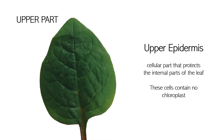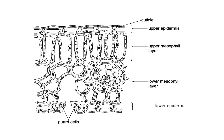Below the cuticle are the upper epidermal cells. This is a layer of cells that contains no chloroplast and is responsible for protecting the internal parts of the leaf. In the cross section, you can see the upper epidermis below the cuticle — they are layers of cells with no chloroplast.